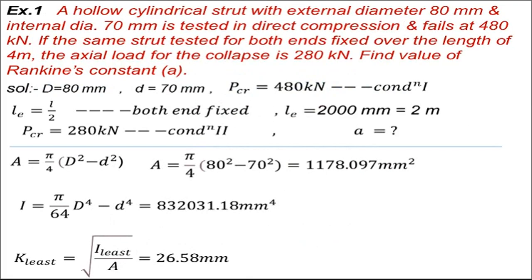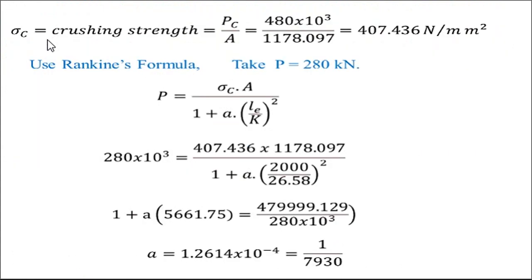The crushing load — the critical load at which the column failed due to direct compression — is 480 kN. The crushing stress sigma_c is determined as sigma_c = P_c / A. So 480 × 10³ divided by the cross-section area 1178.097 gives sigma_c = 407.436 N/mm². This is the direct crushing stress or crushing strength of the strut.